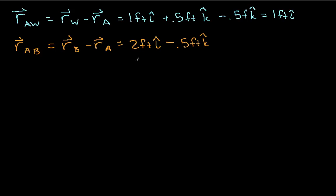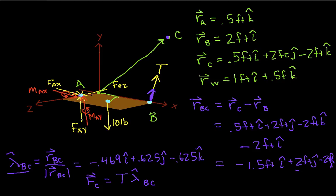So basically, to go from A to B, I go 2 feet in the x direction, and then half a foot in the negative z direction. So we've got R_AW and R_AB, so let's start computing moments. This is so exciting.